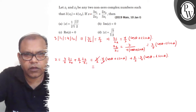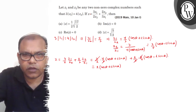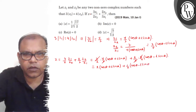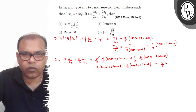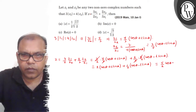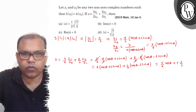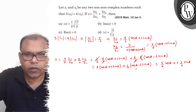Solving this, we get 2 into (cos θ + i sin θ) combined with 1 by 2 (cos θ − i sin θ), which simplifies to 5 by 2 cos θ plus i into 3 by 2 sin θ.